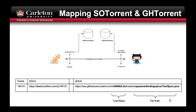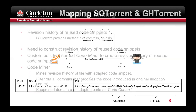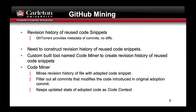As a precursor to this work, we use SOTorrent and GHTorrent datasets to conduct a preliminary study. We mapped both datasets using the following derivations of foreign keys. The SOTorrent dataset includes links to GitHub projects. From such a URL, we can identify the user, the repository, and the file path within the project. However, GHTorrent includes only the metadata of GitHub projects and their activities, but we needed the revision history and changes at the code snippet level, so we did our own mining on these mapped GitHub projects.